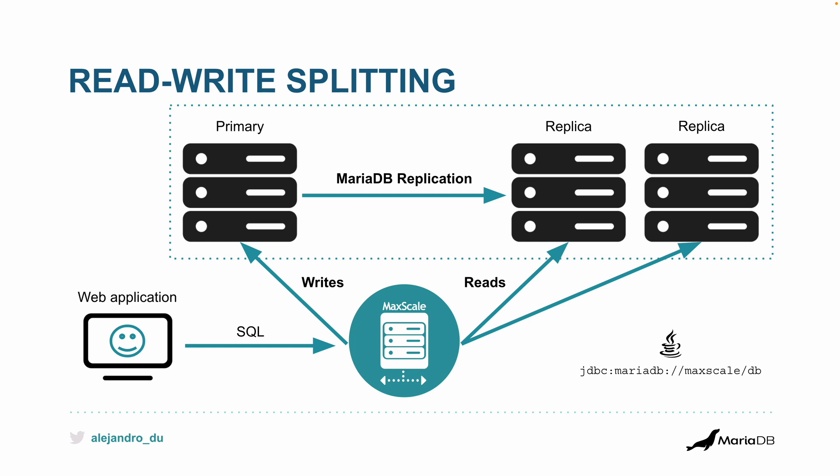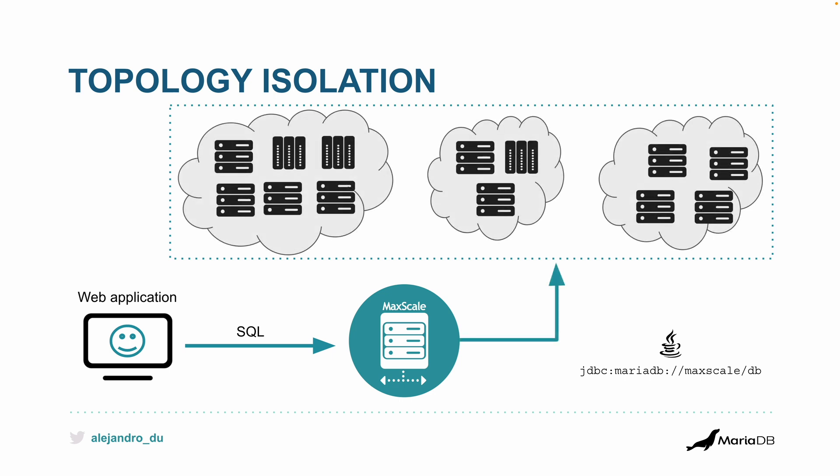Speaking of topology, the current database topology is isolated and can be changed. You could have, for example, three availability zones, regions, or clusters. Some of them might even have MariaDB ColumnStore to make analytics faster — queries that work with a whole column to calculate aggregate functions like average or count.